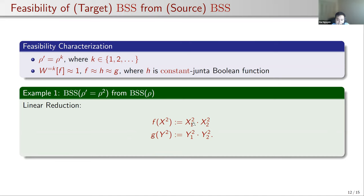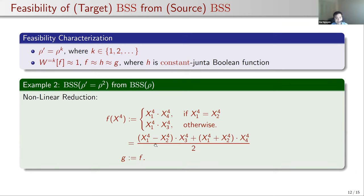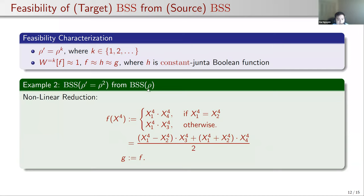As seen before, linear reductions where f and g output the product of their samples can simulate one sample of BSS rho' from two samples of BSS rho. All Fourier weights of this function are concentrated on degree two, since the linear term is a product of two variables x1 and x2. Interestingly, there also exist nonlinear reduction functions — which I won't detail here — but they also have Fourier spectrum concentrated on degree two, using four samples of BSS rho to simulate one sample. So for linear reductions we use only two samples.